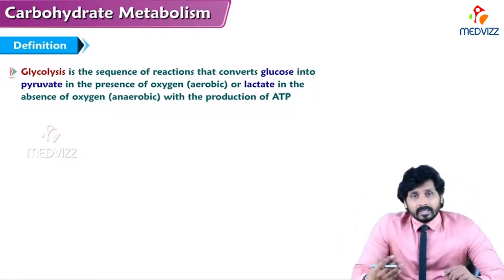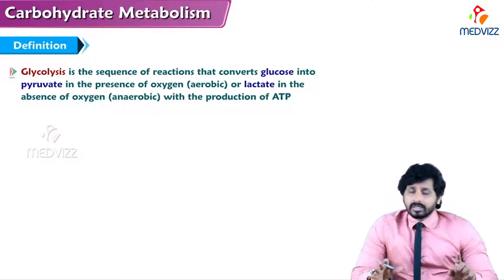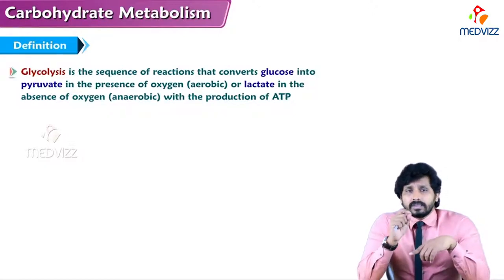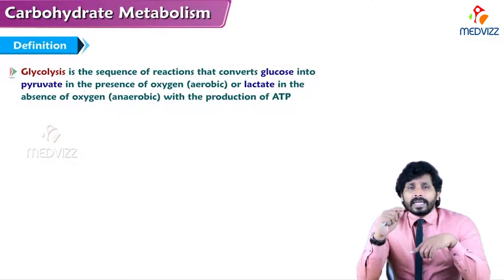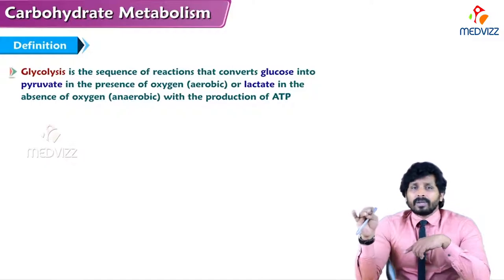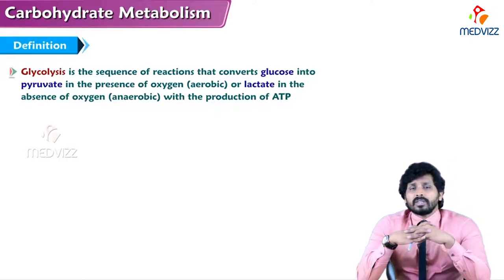In glycolysis, glucose is converted into pyruvate, which is the end product. The fate of pyruvate depends on the availability of oxygen. If oxygen is present — aerobic glycolysis — pyruvate is converted into acetyl-CoA, which enters the TCA cycle in the mitochondria. If there is no oxygen, pyruvate is diverted to produce lactate.